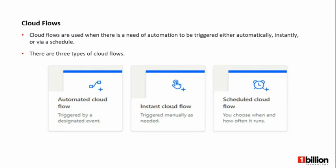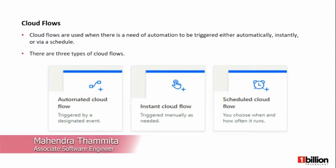Instant flow is somewhat different. We can initiate an instant cloud flow using our own action — a user can click a button to initiate one, or select a row in an Excel table to start an instant cloud flow. For scheduled flows, think of a scenario where you have a repetitive task that you need to run every day at a certain time, once a month, or once a week.